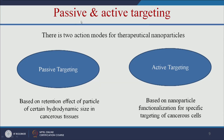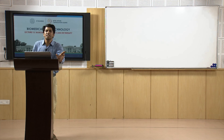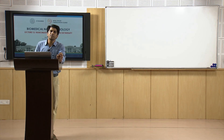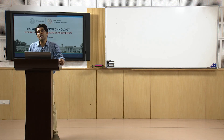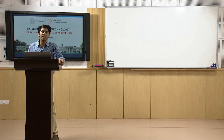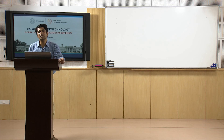Nanoparticles can be targeted to tumor cells by passive targeting and active targeting. Passive targeting is based on the retention effect of particles of certain hydrodynamic size in cancerous tissue. The cancerous tissue or tumor location has leaky blood vessels and enhanced permeability and retention — that is called the EPR effect. Due to that, nanoparticles will go and accumulate only at the tumor location. That is called passive targeting.